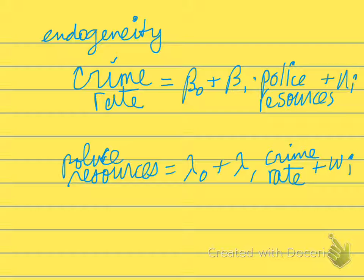So here's an example of endogeneity in a regression. Suppose we have a regression that has as dependent variable the crime rate and as independent variable some measure of police resources.